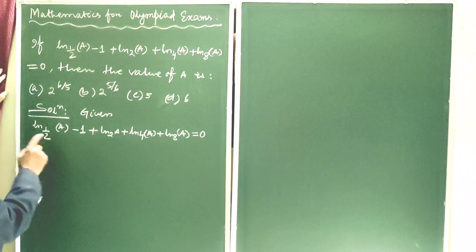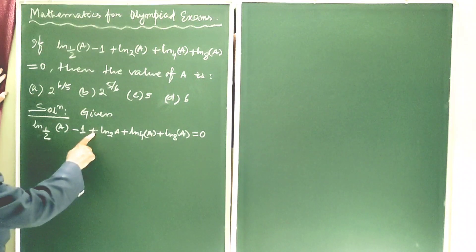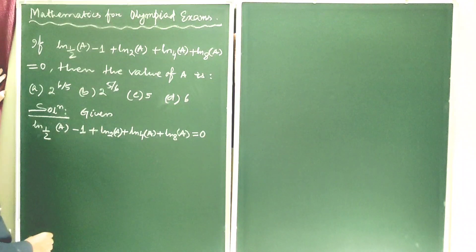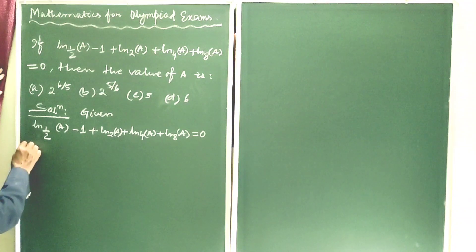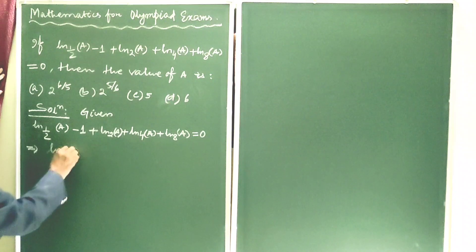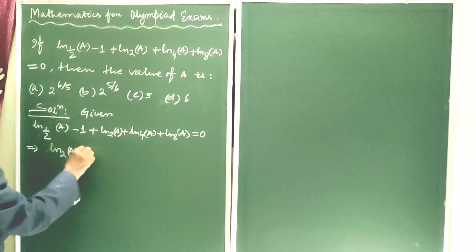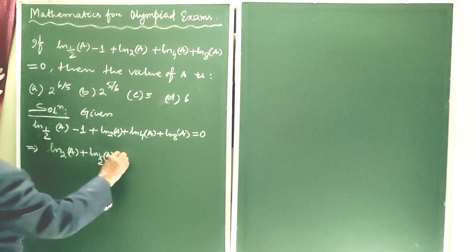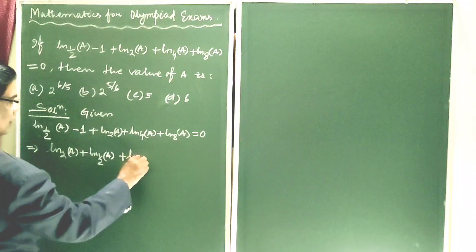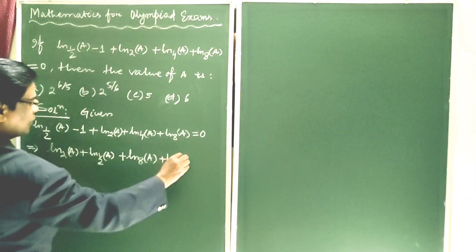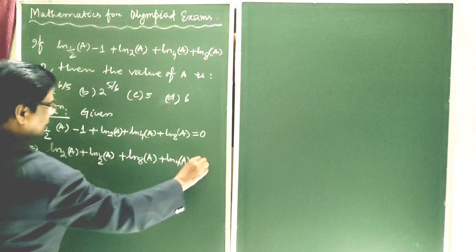Given: ln base one-half of (A minus 1), plus ln base 2 of A, plus ln base 4 of A, plus ln base 8 of A is equal to 0. This can be rearranged so that ln base 2 of A plus ln base one-half of A plus ln base 8 of A plus ln base 4 of A equals 1.